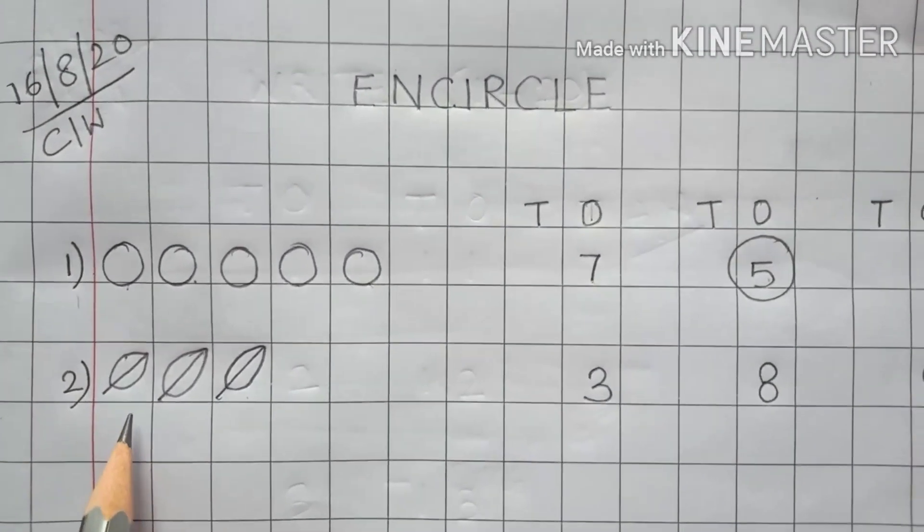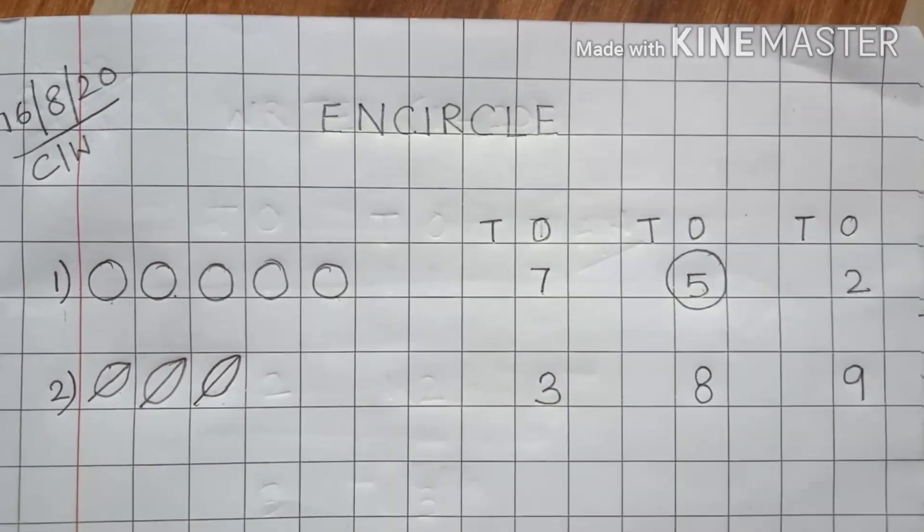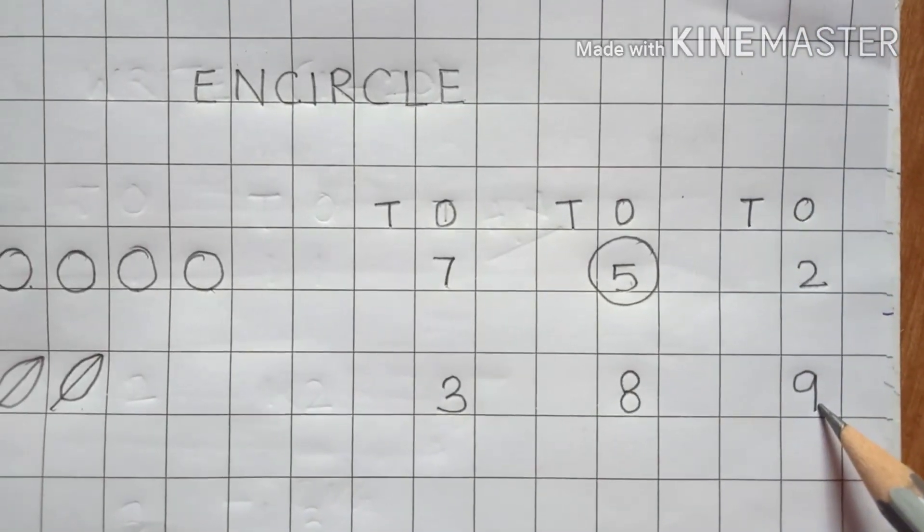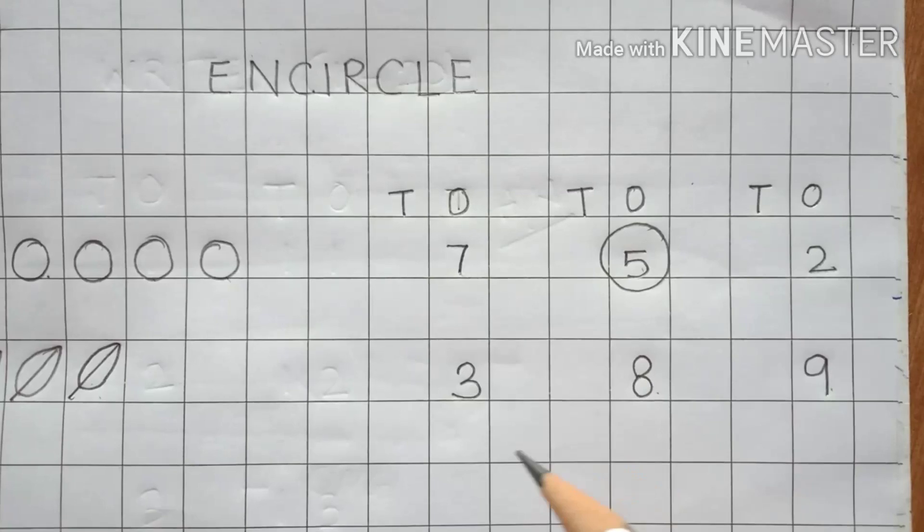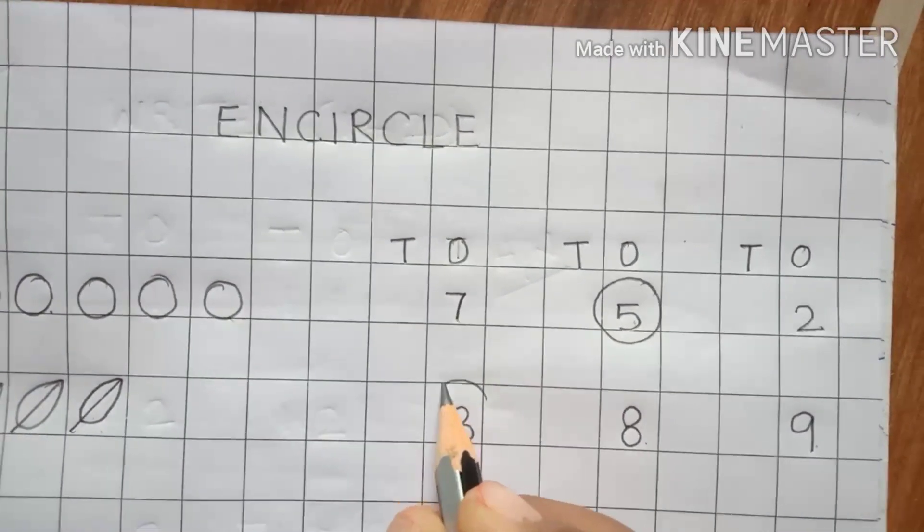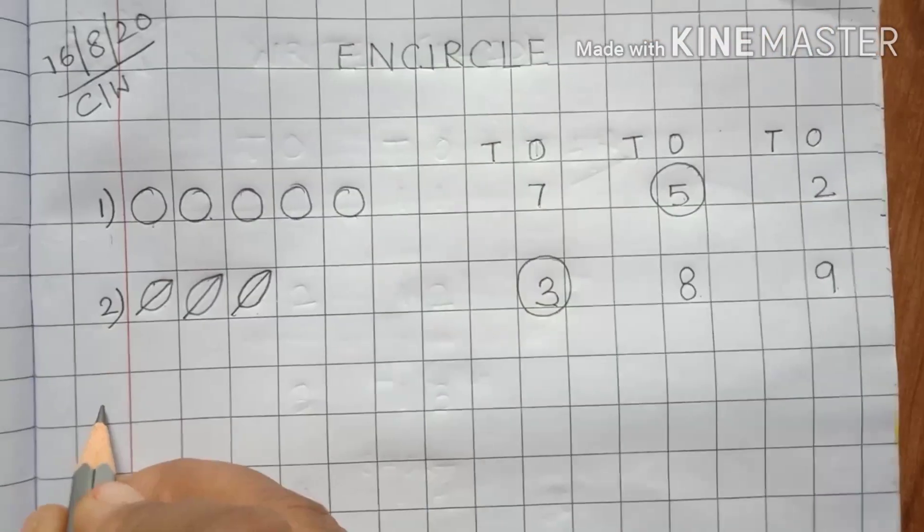Under 1s and here 9. So how many leaves have we counted? 1, 2, 3. So how many leaves? 3. Is this 3? No. Is this 3? Uh-huh. Is this 3? Yes. So what we will do? We will encircle the number. Good.